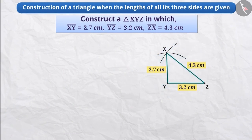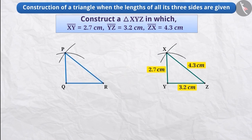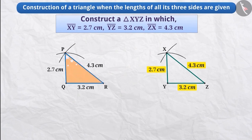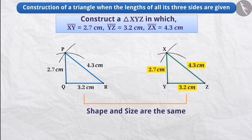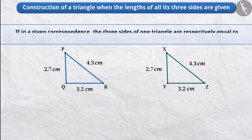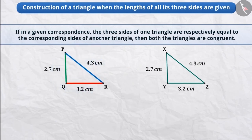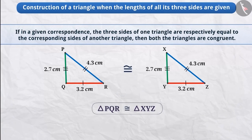Simultaneously, if we construct a triangle PQR with the same measurements — in which the length of the side PQ is 2.7 cm, the length of the side QR is 3.2 cm, and the length of the side RP is 4.3 cm — then we see that both the triangles overlap each other completely. That is, they have the same shape and measurements, which means both the triangles are congruent. This criterion of congruence is also known as the SSS congruency criterion.